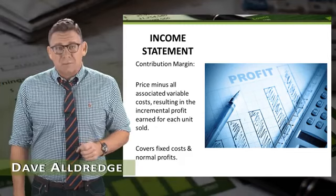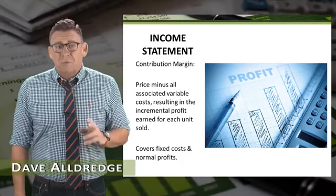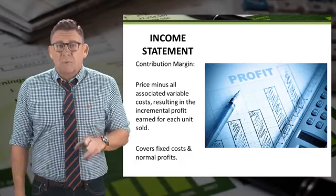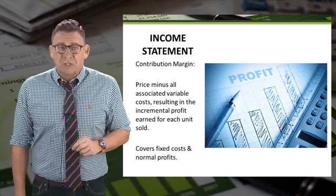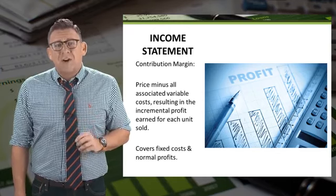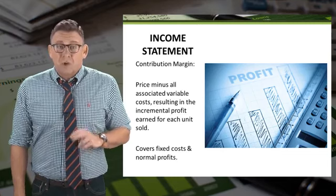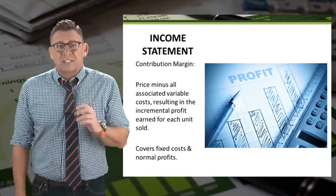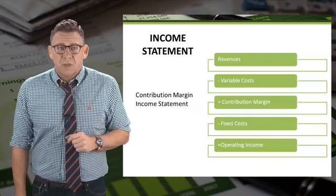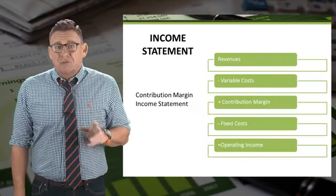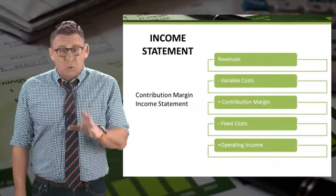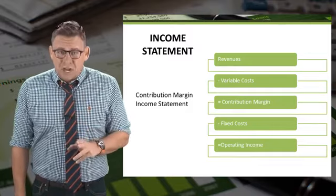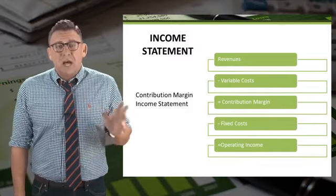The contribution margin income statement is used for many internal decisions. This is because costs are grouped by behavior rather than function, and that provides better internal information. You recall that the contribution margin itself is revenues minus variable costs. The full income statement is revenues minus variable costs equals contribution margin, from which we subtract fixed costs to get operating income.